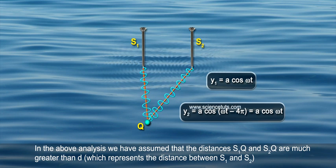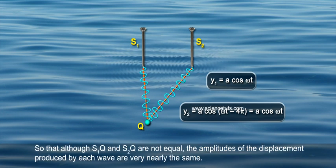we have assumed that the distances S1Q and S2Q are much greater than D, which represents the distance between S1 and S2, so that although S1Q and S2Q are not equal, the amplitudes of the displacement produced by each wave are very nearly the same.